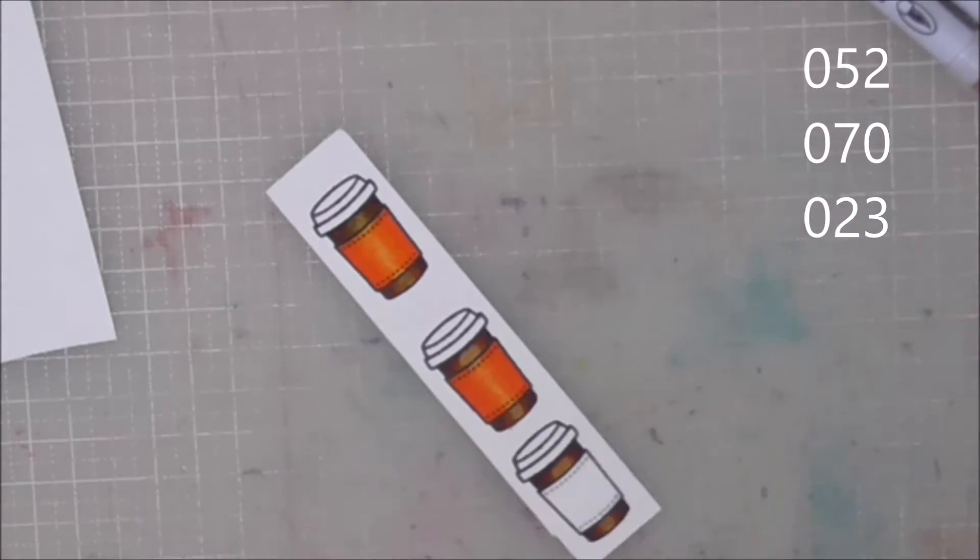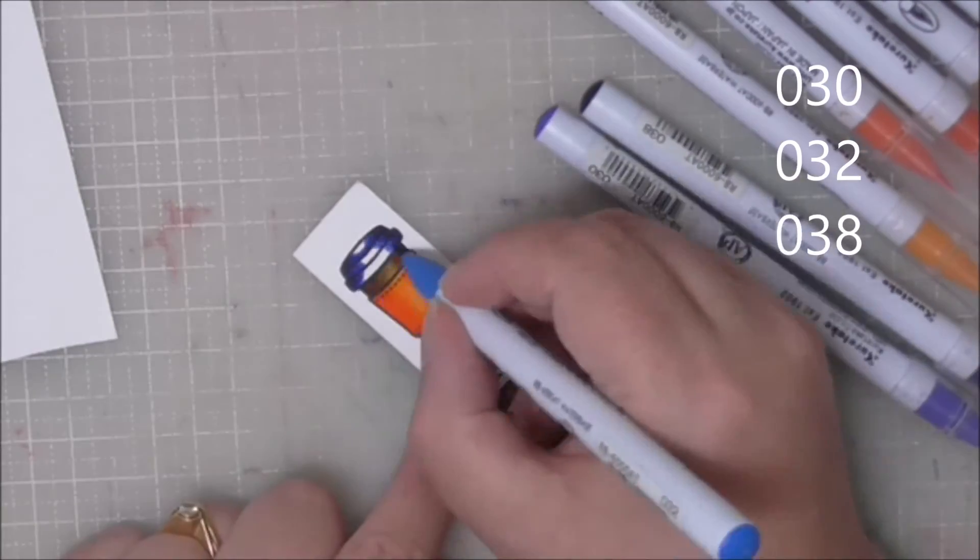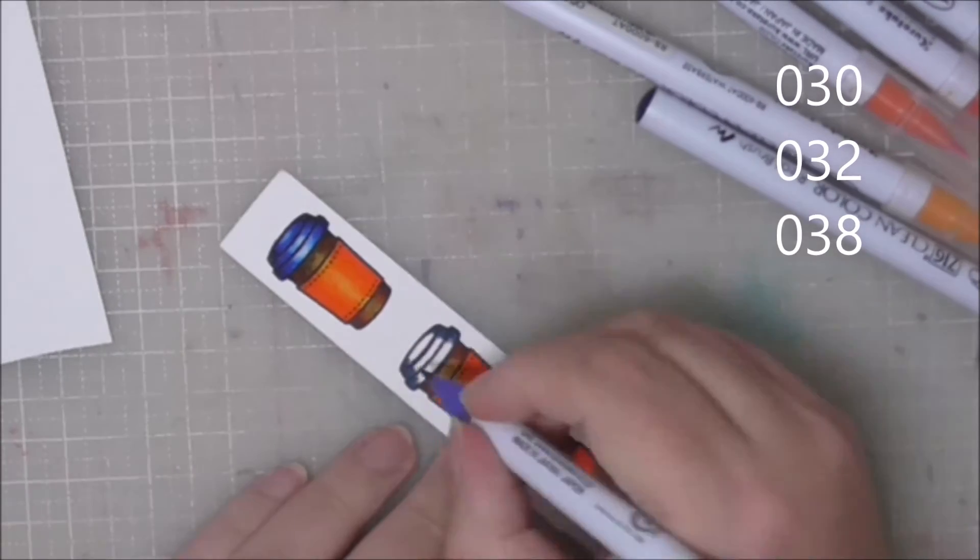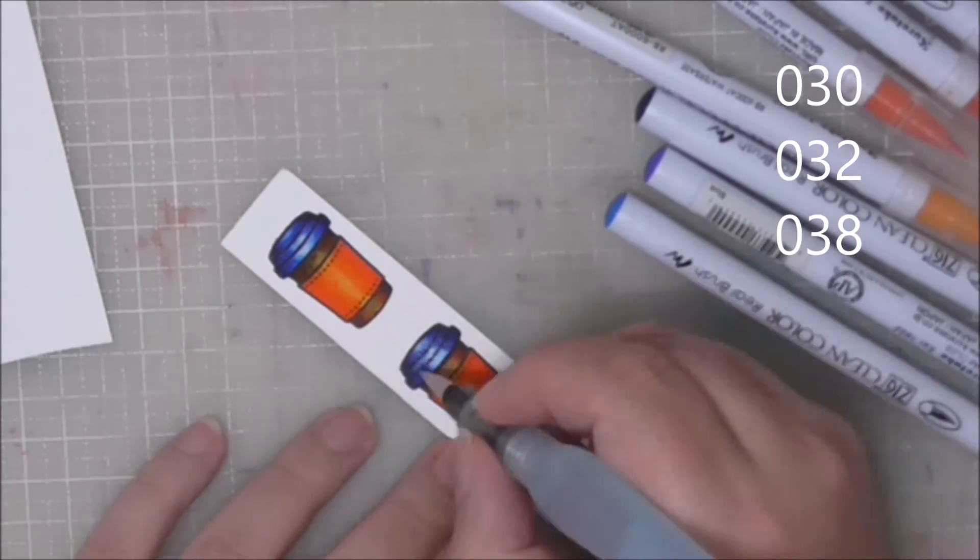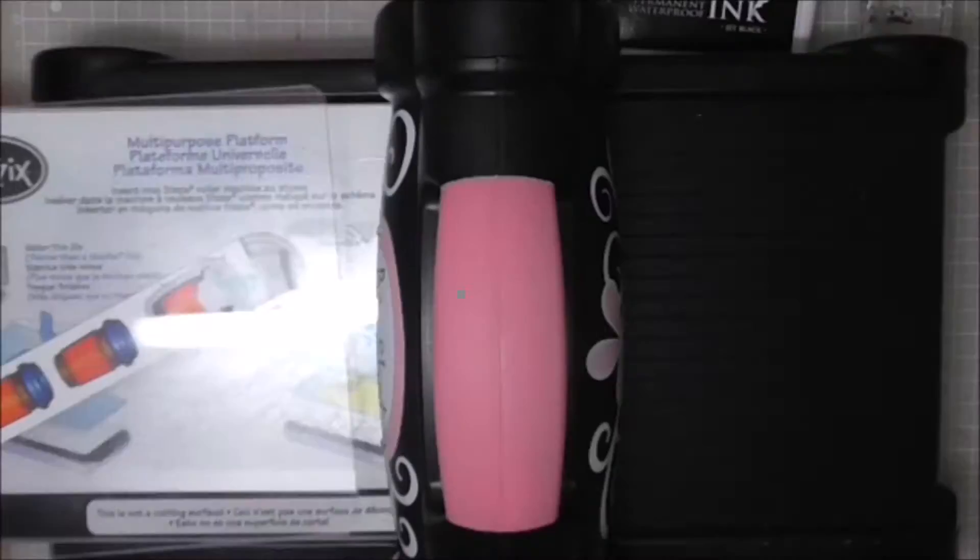I'll put all the colors on the blog, orange is 052, 070, 023 and our blue markers are 030, 032 and 038. I'm also using an aqua brush just to give the lid a little bit of a wash.